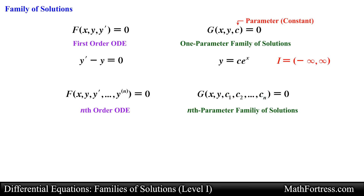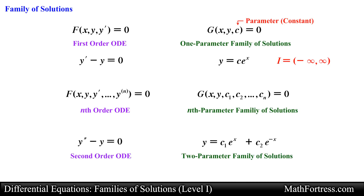As an additional example, the function y equals c₁ times e to the x plus c₂ times e raised to the power of negative x represents a two-parameter family of solutions to the differential equation y double prime minus y equals 0. It's a two-parameter family of solutions because it contains two constants, c₁ and c₂.